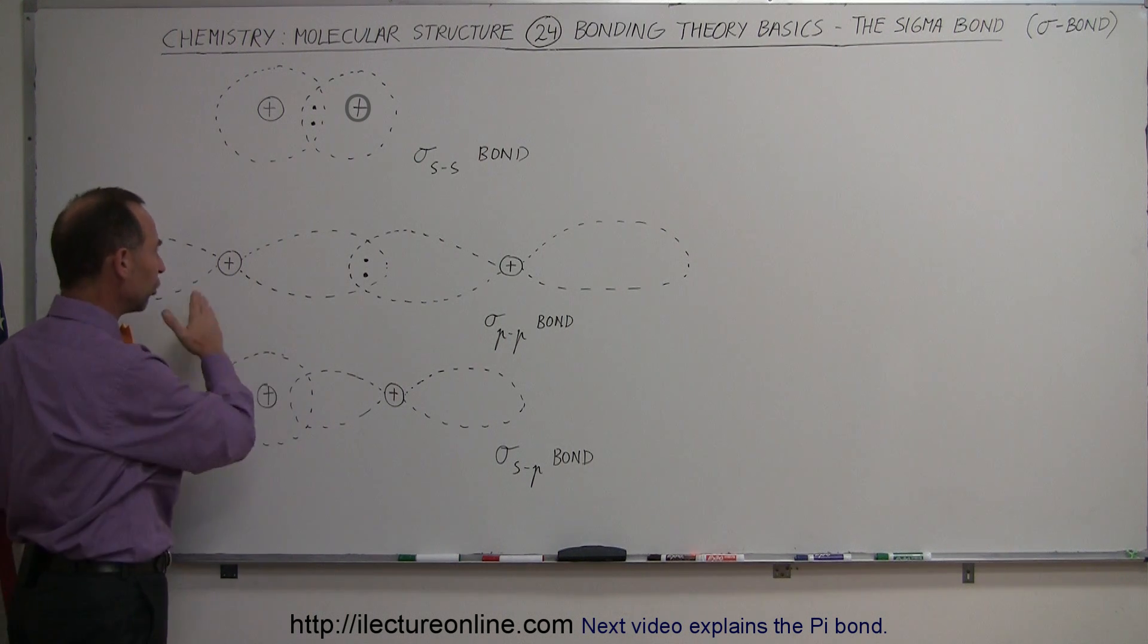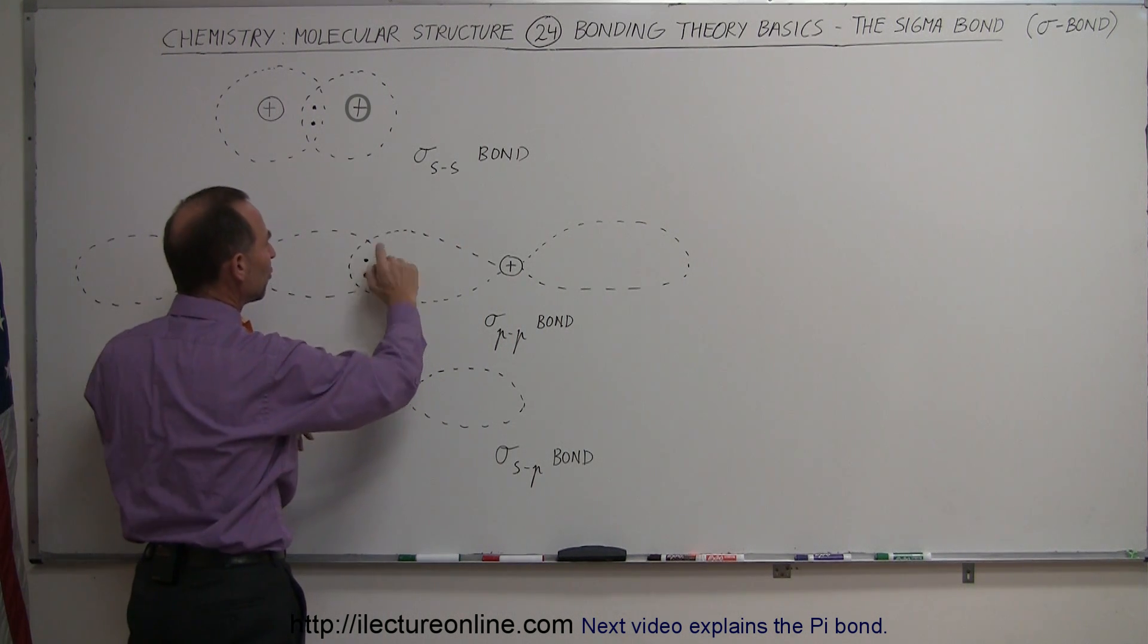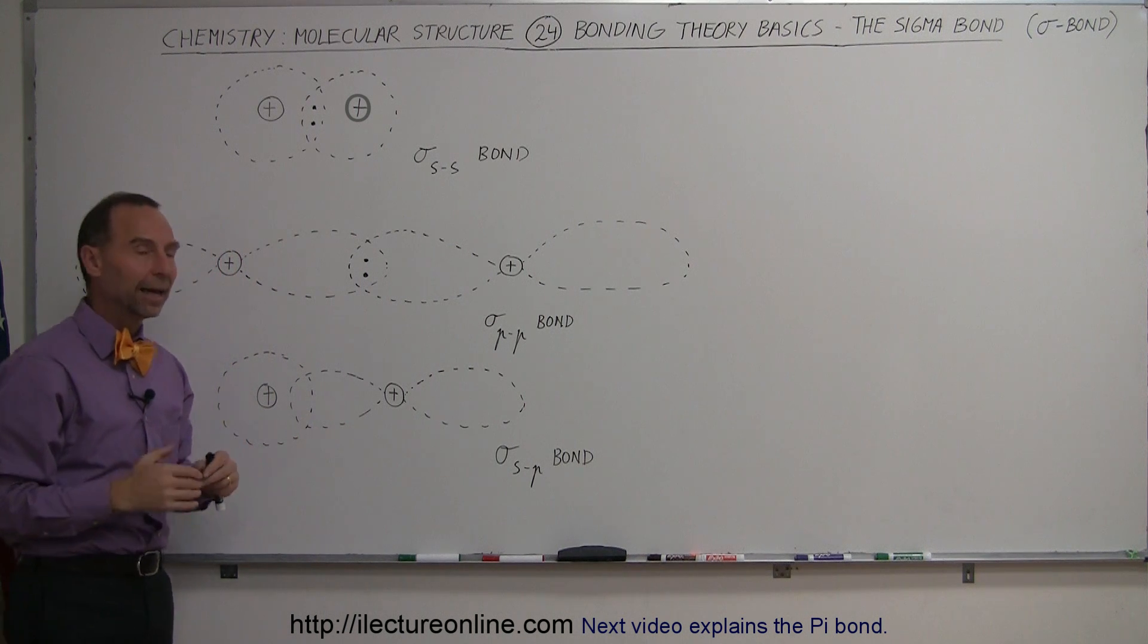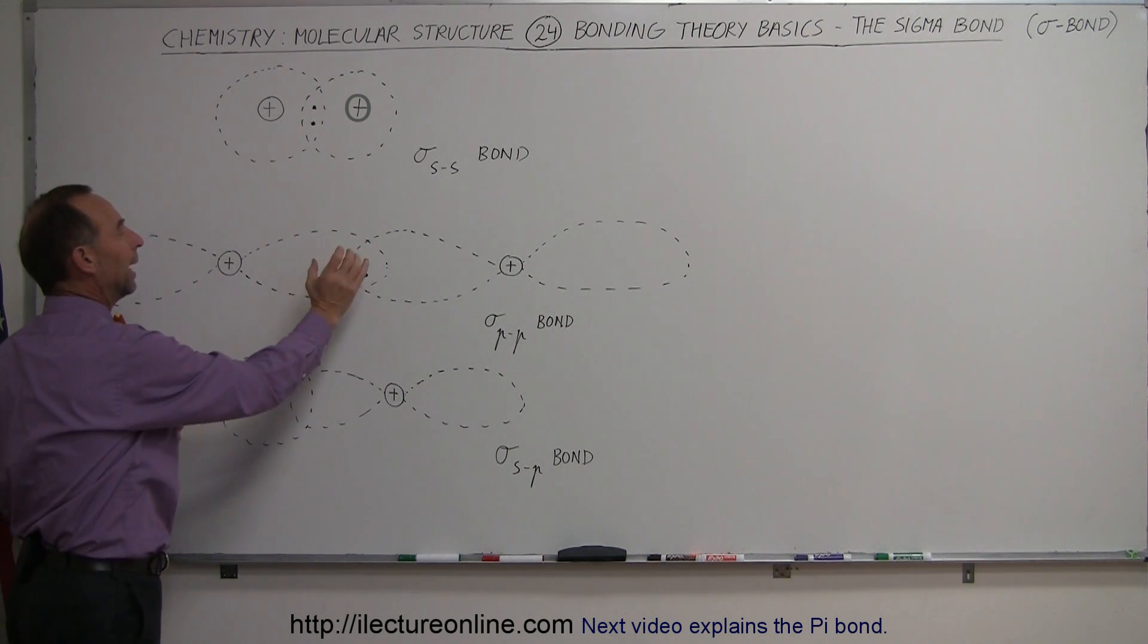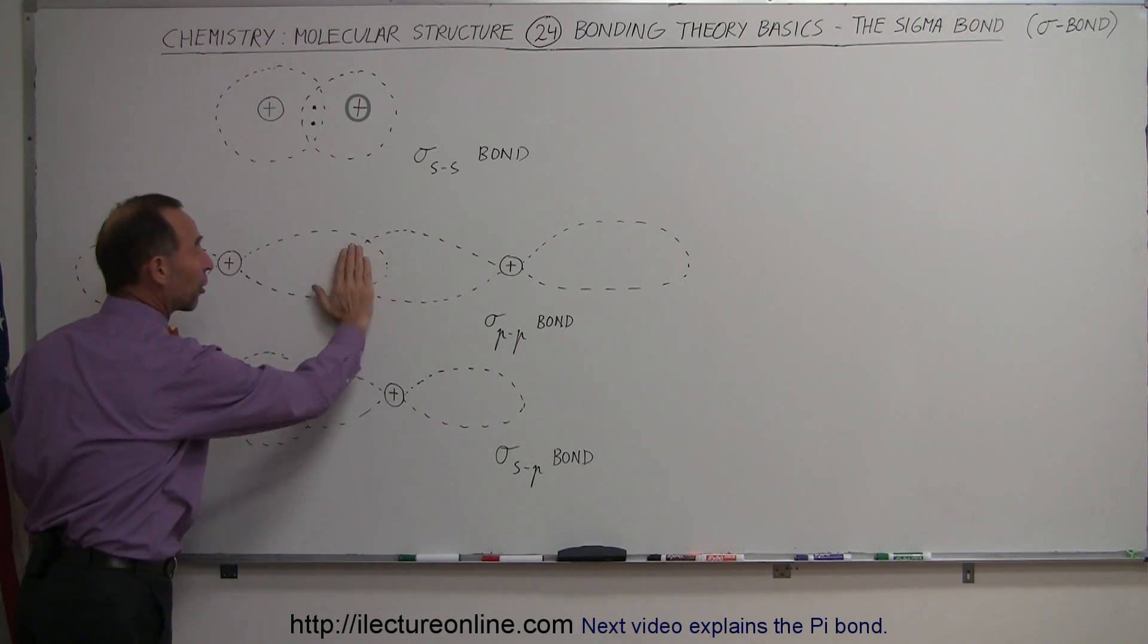And let's say that each of those two p orbitals only have one electron in them. So when they come together and overlap, they form a region where the two electrons can exist as the highest probability region. And in that particular high probability region, you have a negatively charged region.